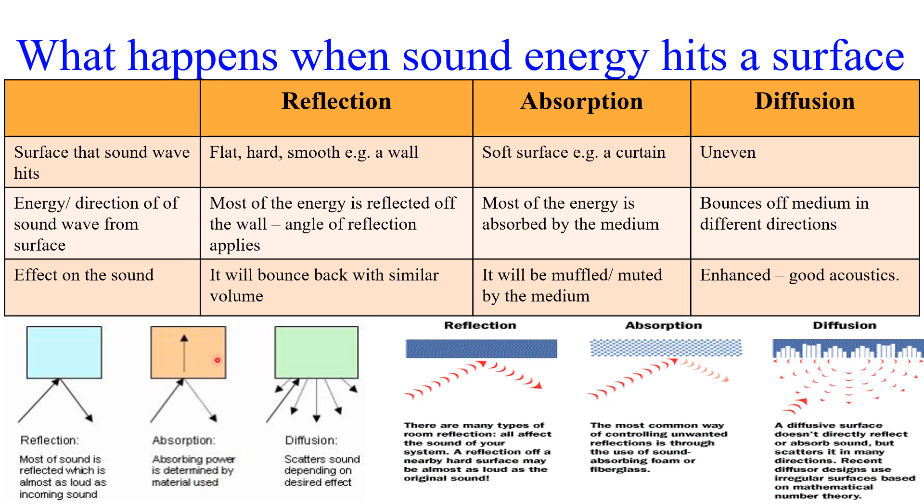If it's a soft surface, a lot of that energy will be transferred to that medium. Some of the sound will bounce off but it will be reduced in terms of energy and volume. If it's an uneven surface, when that sound wave hits the surface it will bounce off but in all different directions. This is a good thing acoustically if we want to enhance the quality of that sound, particularly with certain types of instruments in your orchestra.